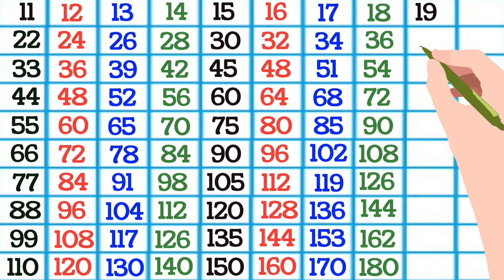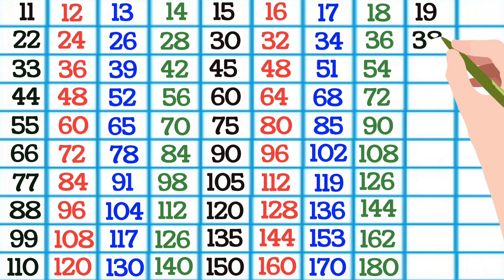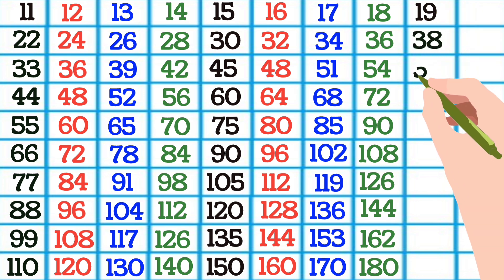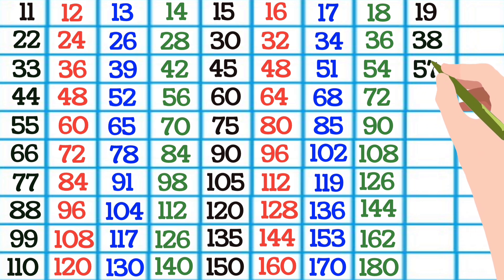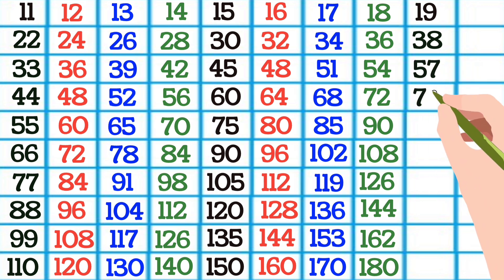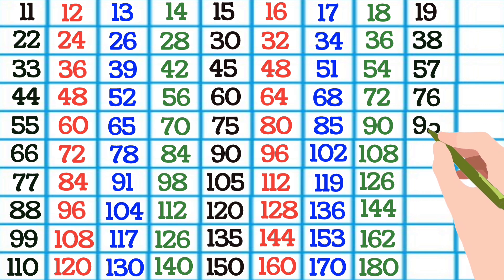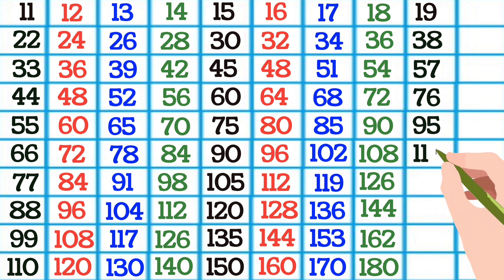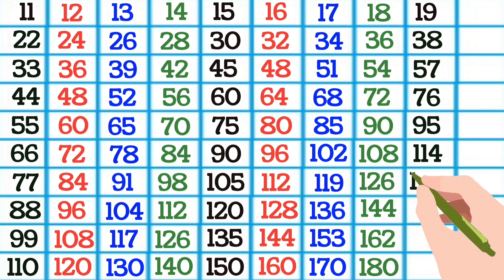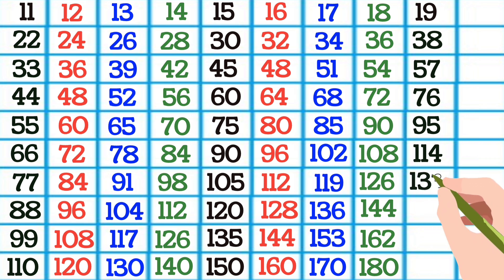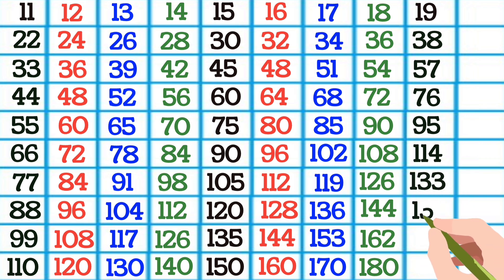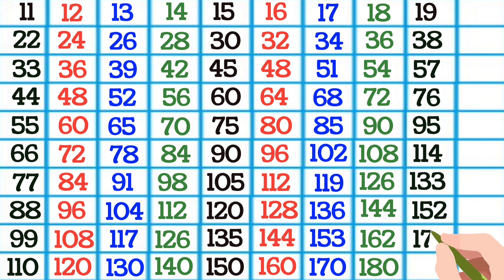19 ones of 19, 19 twos of 38, 19 threes of 57, 19 fours of 76, 19 fives of 95, 19 six of 114, 19 sevens of 133, 19 eights of 152, 19 nines of 171, 19 tens of 190.